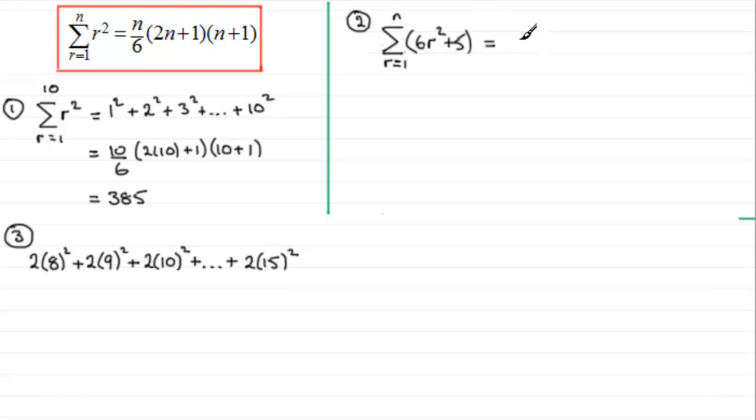In earlier videos, I showed you how we could work with combinations like this. What we do is we see this as 6 times the sum of r squared, r going from 1 to n. And then for the second term, we've got plus the sum of the constant 5, again r going from 1 to n. And then we can pick up on this first one, it's going to be 6 times the sum of r squared, r going from 1 to n. And we can see that it's this result, so it's going to be 6 multiplied by n over 6, and then 2n plus 1, and then n plus 1.